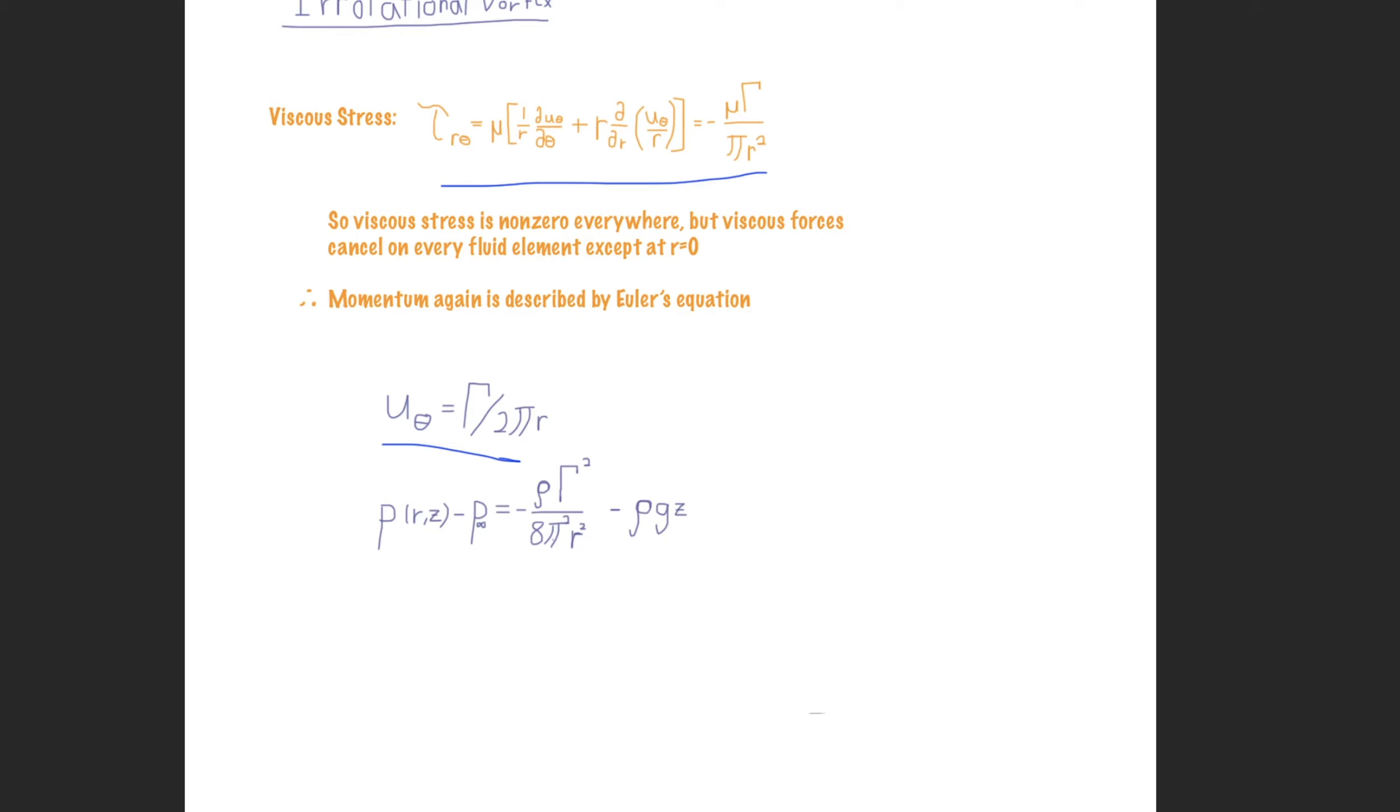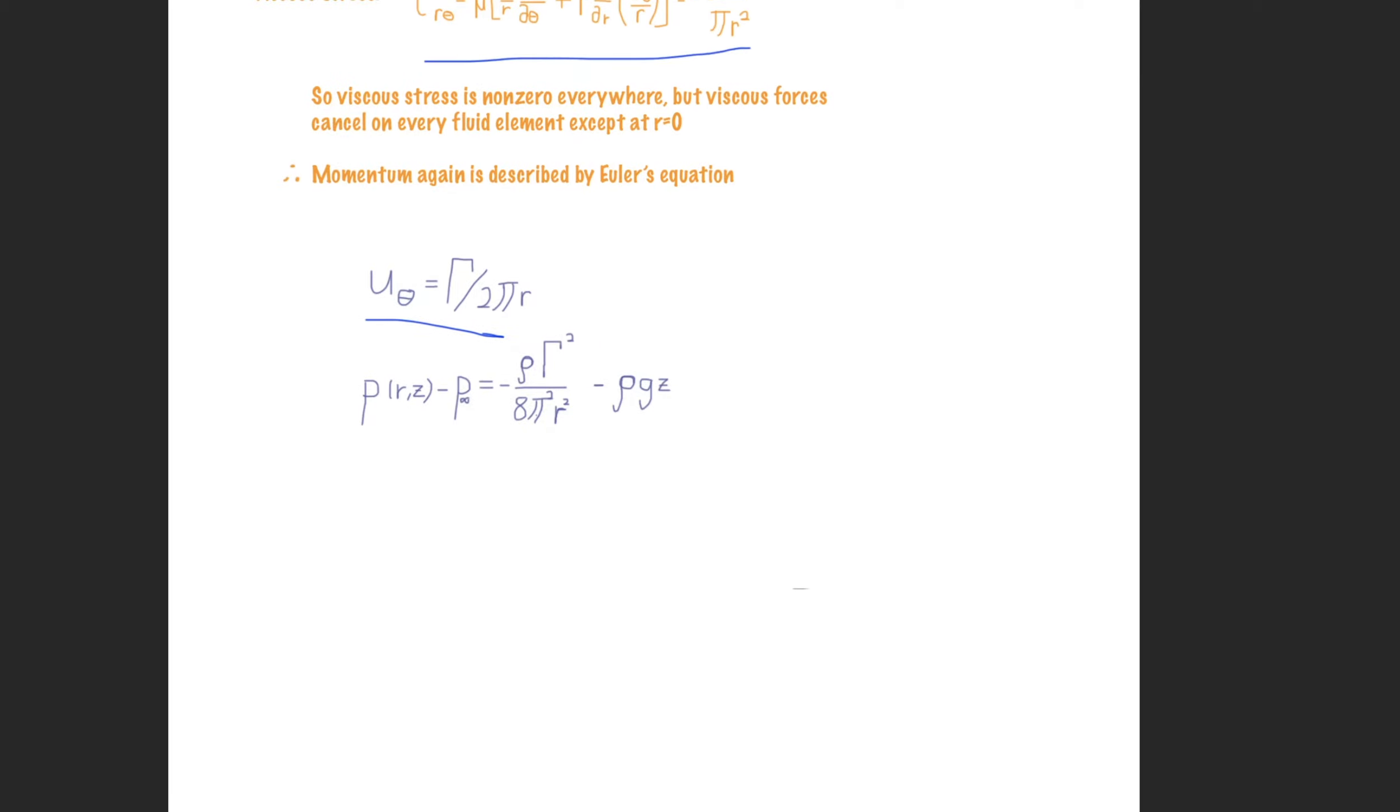And what we end up with is this equation which relates the pressure as a function of r and z versus this p infinity component. And p infinity here, this just corresponds to some pressure at a point, a theoretical point that's so far away from this central vortex line that it's no longer affected by it in any capacity.